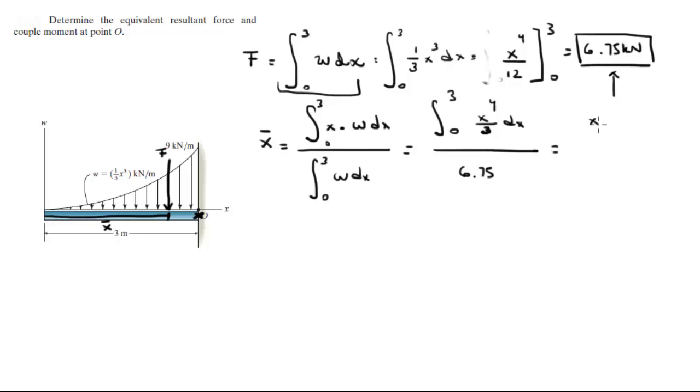So the top becomes x to the 5 over 15. When you plug in the 3 into here, everything becomes 0. So when you plug in the 3, 3 to the 5 over 15, and then divide that by 6.75, you get that x bar is equal to 2.4 meters.